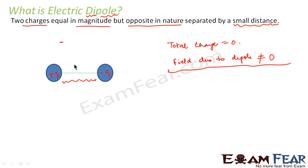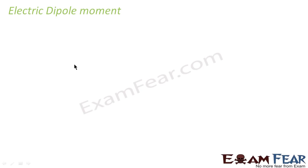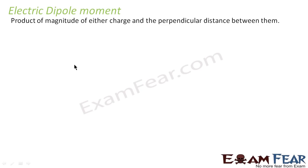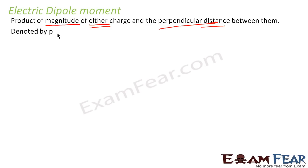We will define the quantity which makes this electric dipole measurable. Just as we have electric field intensity when talking about electric field, similarly we will talk about something called electric dipole moment. This dipole moment basically tells us the strength of the dipole — how strong that dipole is. It is the product of the magnitude of either charge and the perpendicular distance between them, mathematically expressed as p = q × d.